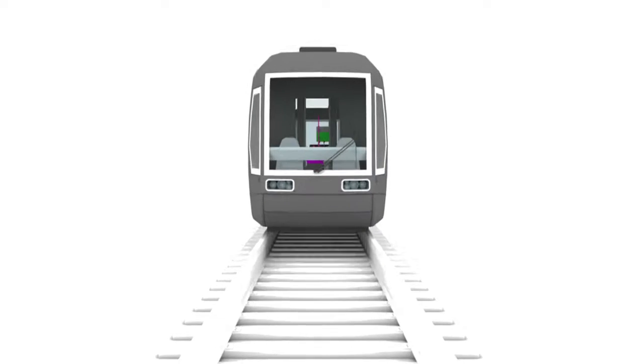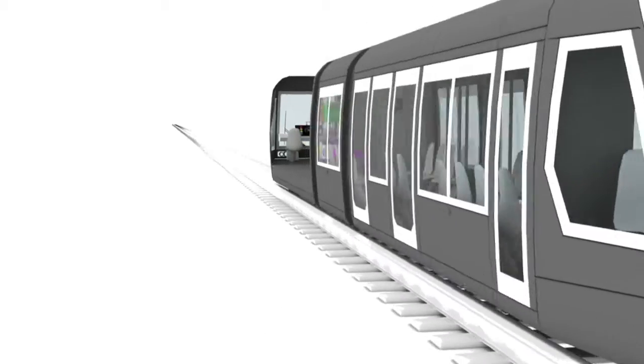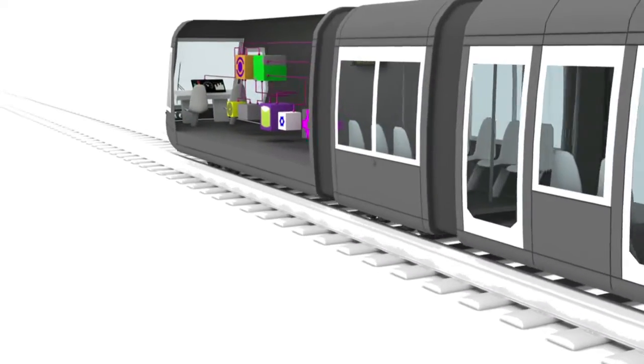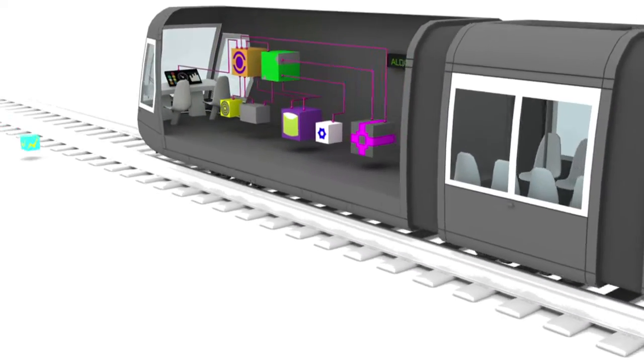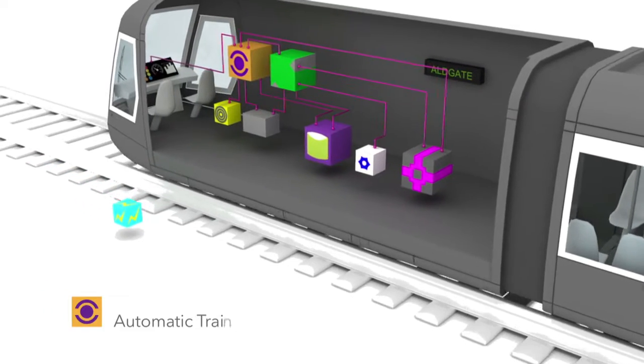To help consolidate your learning let's have another closer look at the train carried systems. These systems in a fully automatic CBTC system feature an automatic train protection system or ATP.